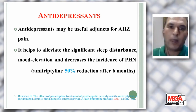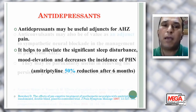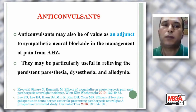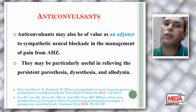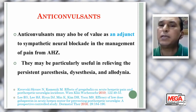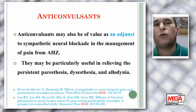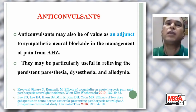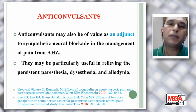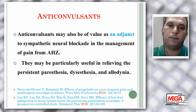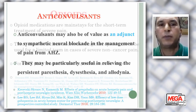However, it is a randomized double-blind study, so it appears in the evidence. Anticonvulsants like gabapentin and pregabalin can be used as adjuvants with sympathetic blockade. They may be useful in relieving resistant paresthesia and allodynia, but remember that they have no value in prevention of post-herpetic neuralgia — they can alleviate pain in conjunction with sympathetic blockade, but have no preventive value. Opioids are the mainstay for short-term treatment of severe pain.